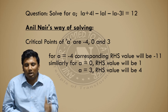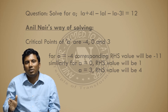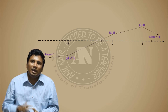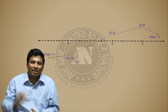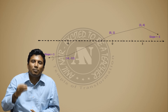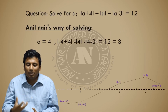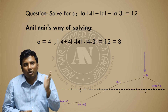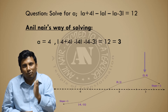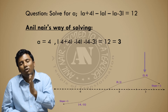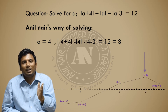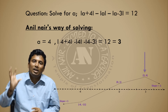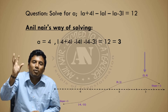The points to plot are (minus 4, 11), (0, 1), and (3, 4). After drawing this, take a point greater than 3 — for example, a equal to 4. Substituting a equal to 4: (4 + 4) is 8, minus 4 is 4, minus (4 − 3) is minus 1, giving 3. So at a equal to 4, the right-hand side equals 3.